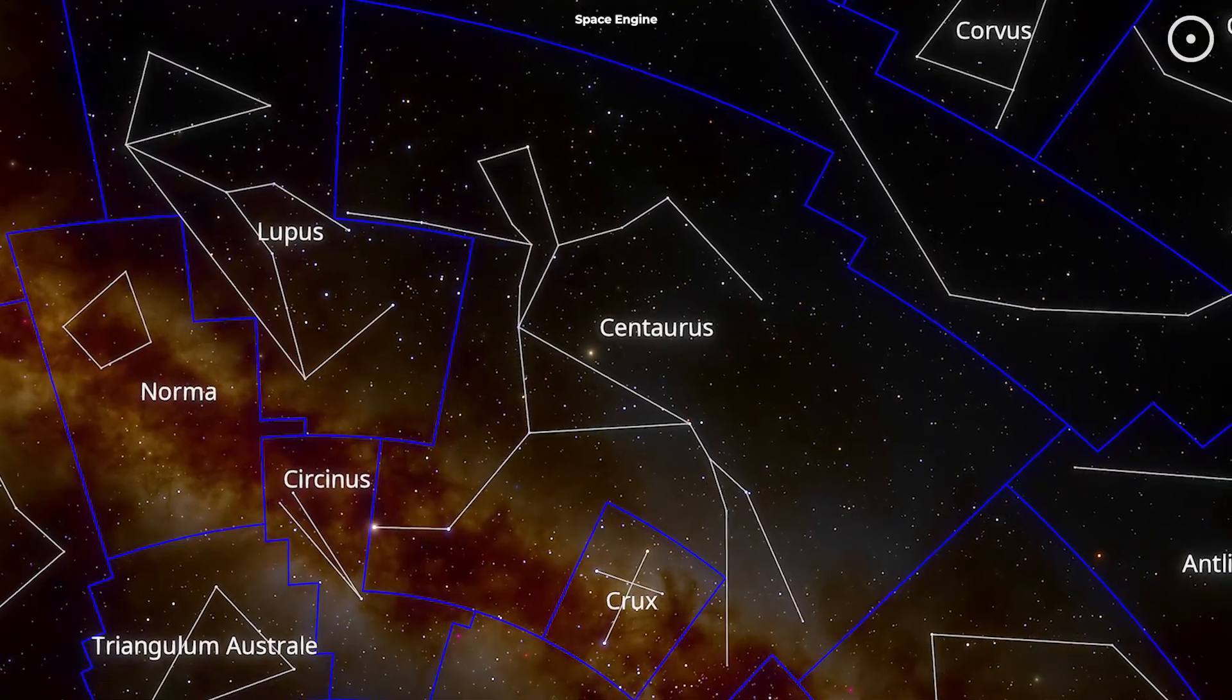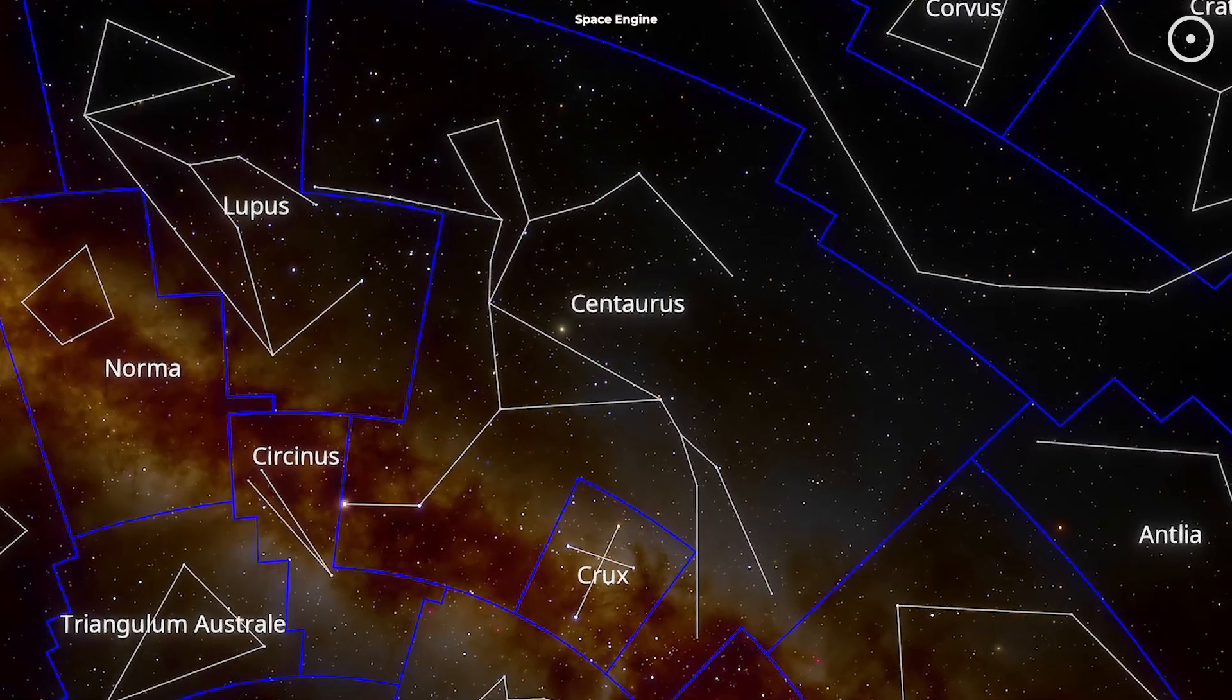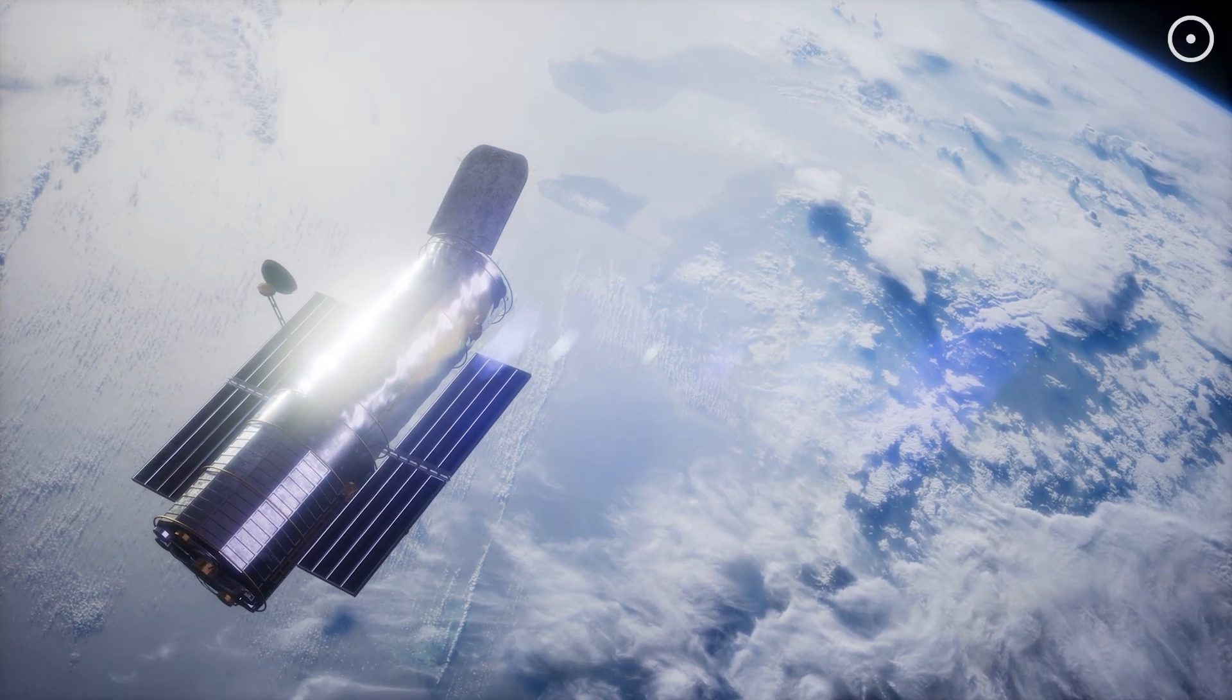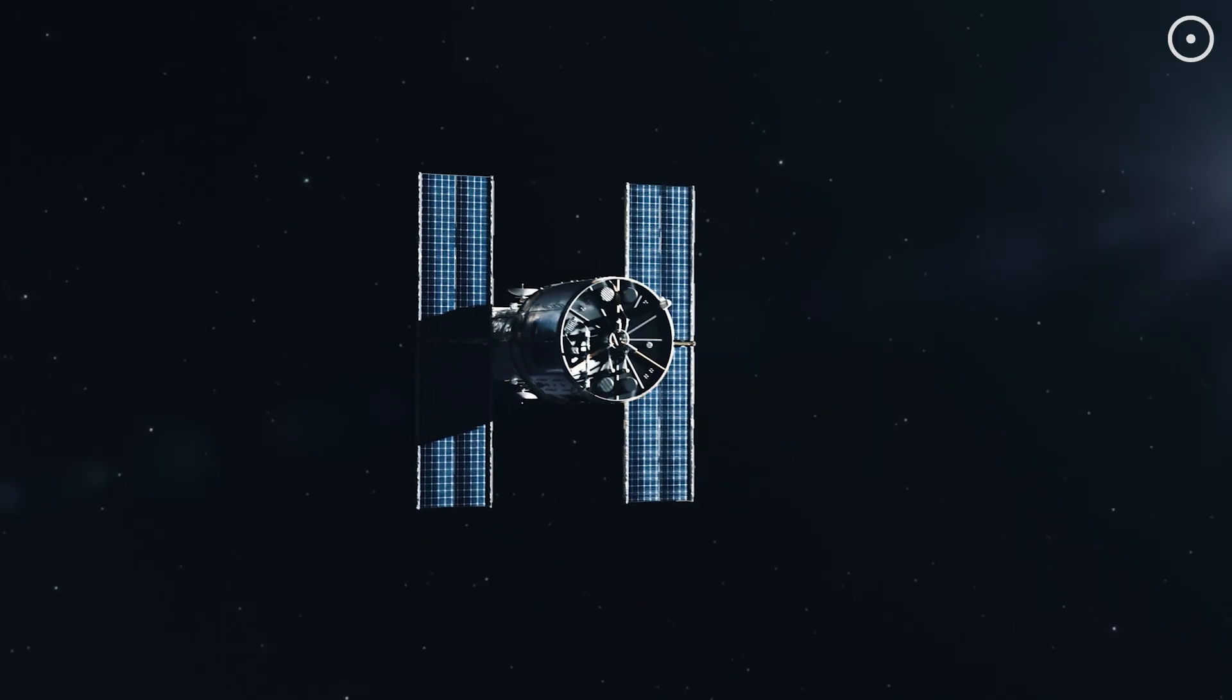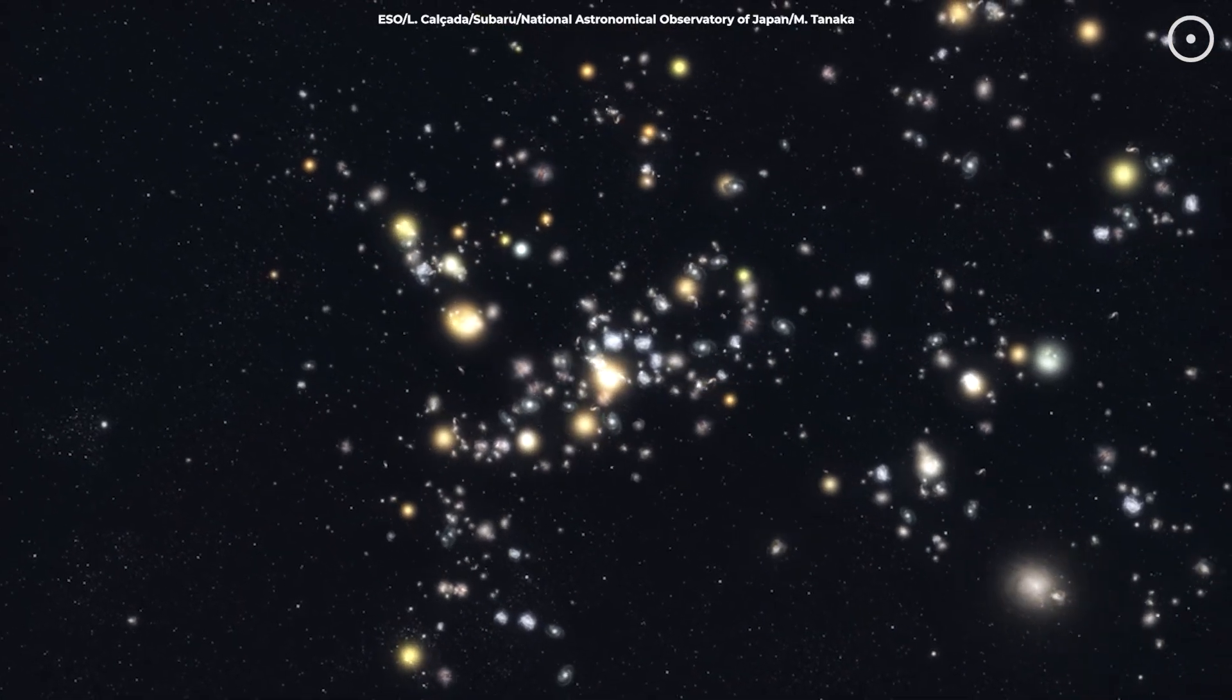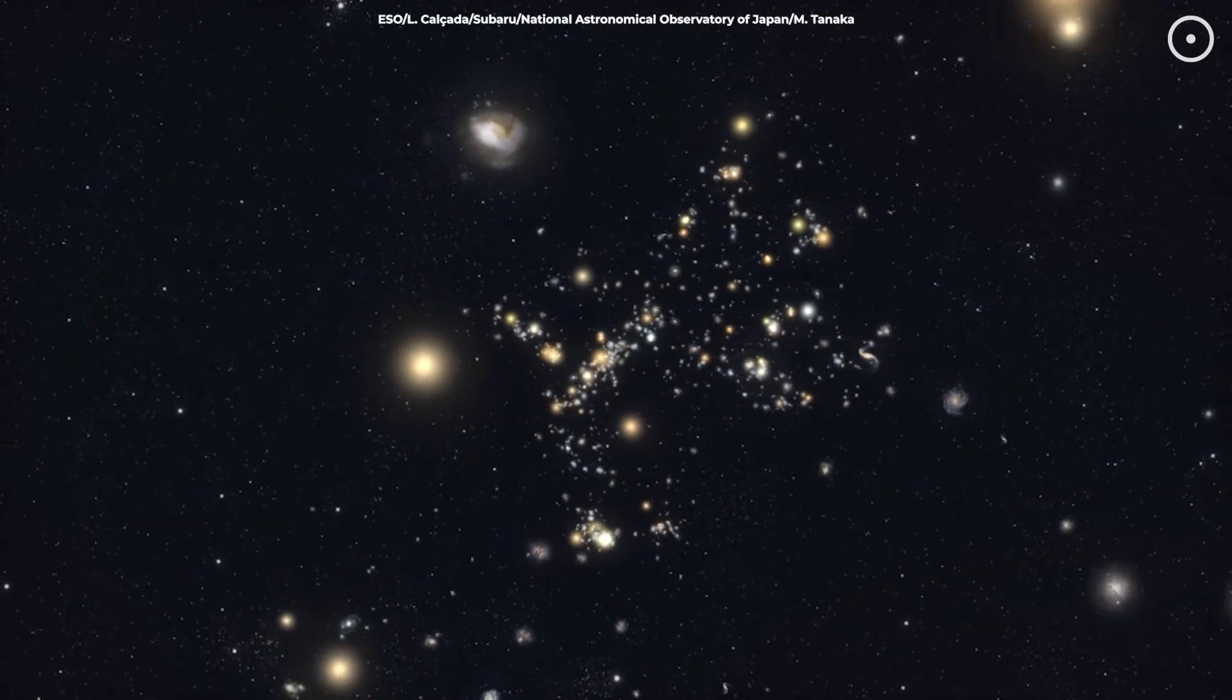But here's the thing. He had no idea what he was really looking at. It's like seeing a foggy mountain in the distance and not realizing it's a whole city hidden inside. Fast forward to now, with modern telescopes and detailed surveys like the Cosmic Flows project, and we can map this cloud in stunning detail. It turns out Shapley was right. It was a massive supercluster, and now we know it's far bigger than anyone could have imagined.